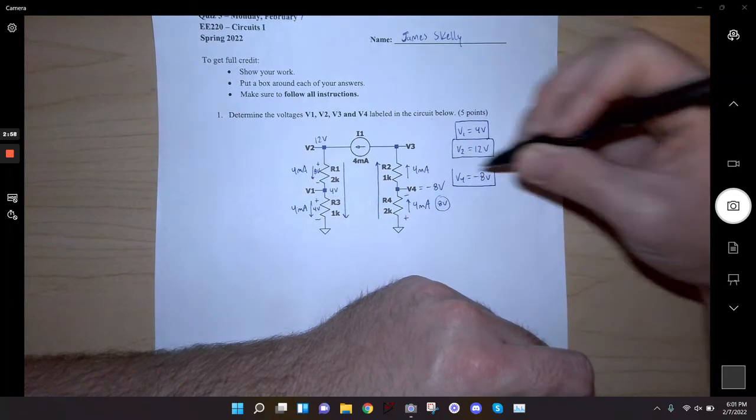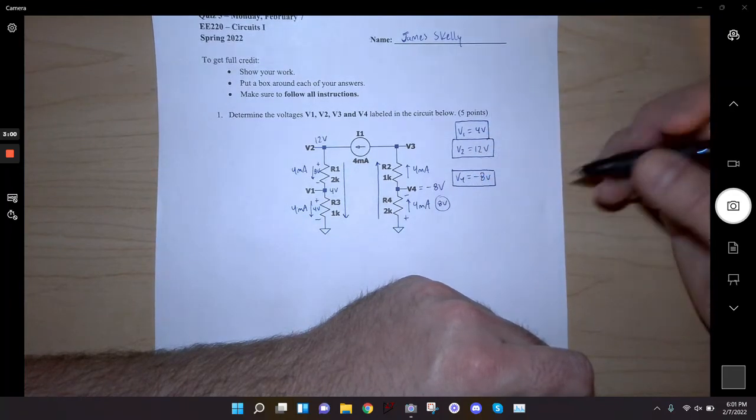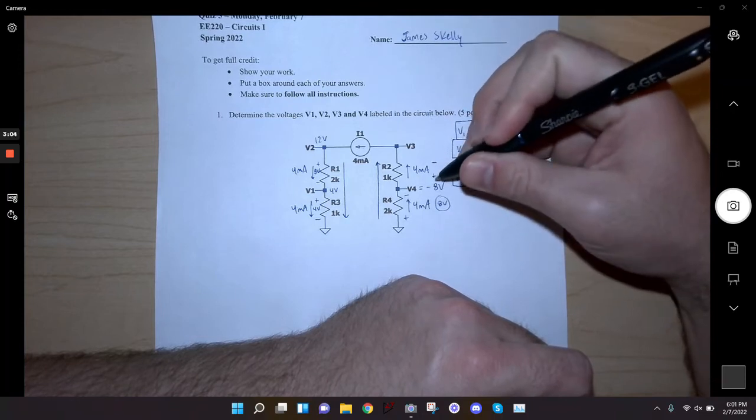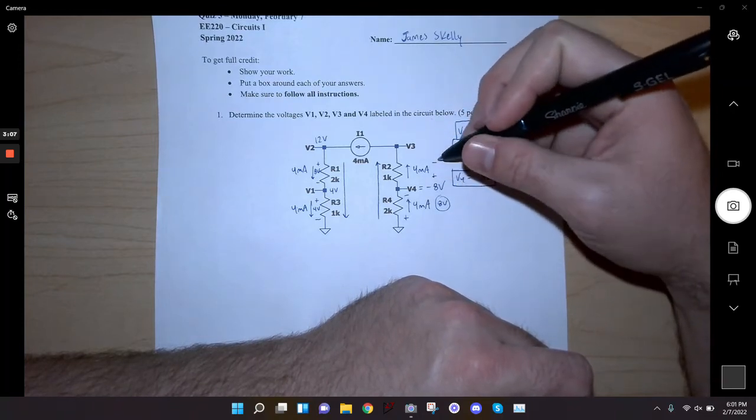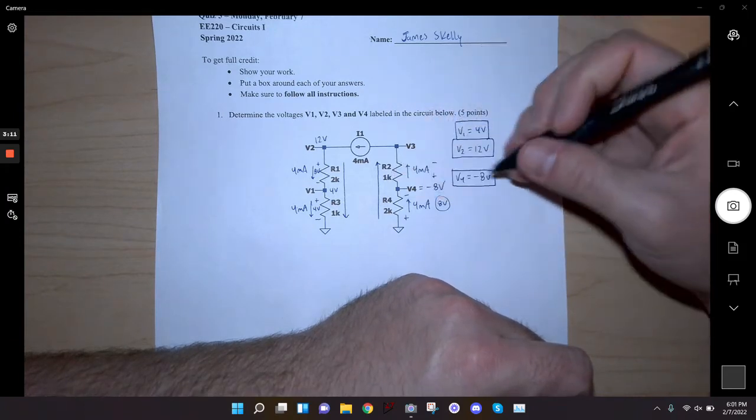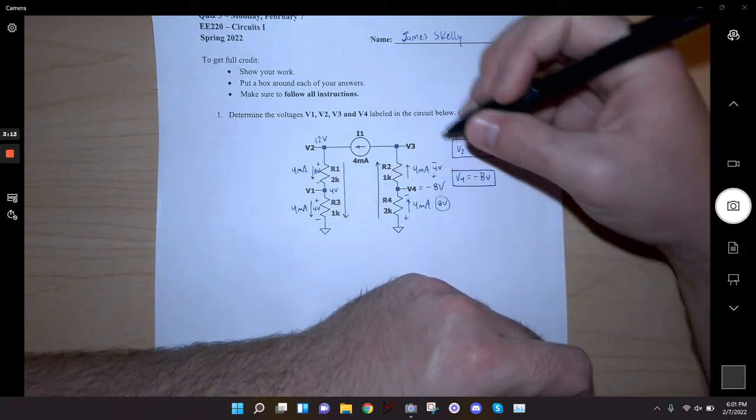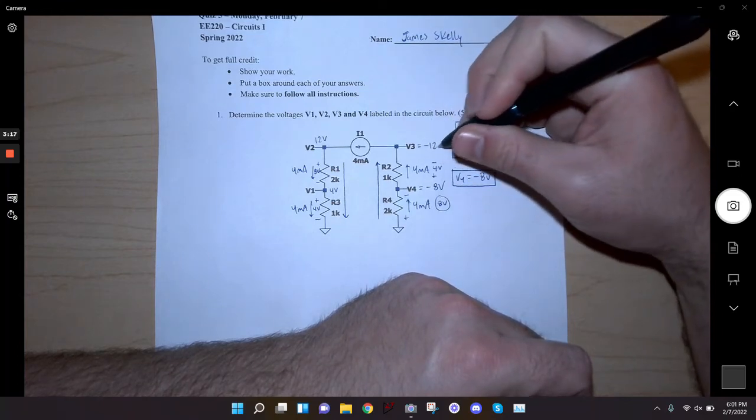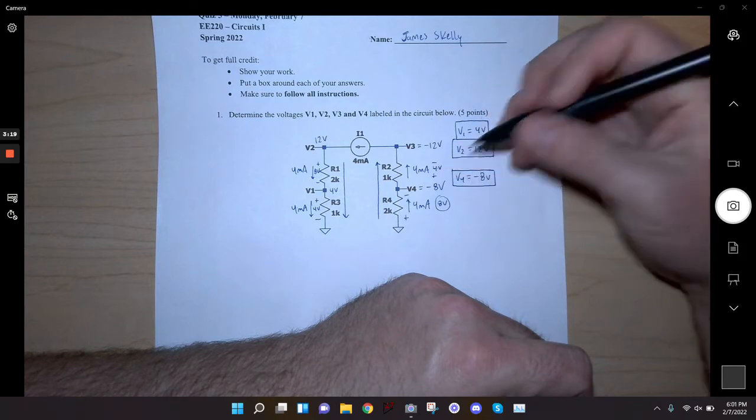So that's v4, so v4 is negative 8 volts. For v3, all I do is the same thing. I've got current flowing this way so I know I drop even lower voltage. How much lower? I drop by 4 milliamps times 1k, which is 4 volts. Thus v3 is negative 12 volts because I go from negative 8 and drop by 4.